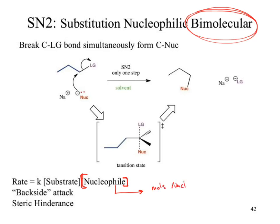Concentration equals moles of nucleophile divided by liters of solvent. If I double the solvent, concentration halves. Both nucleophile and substrate concentrations halve, so the rate drops by one-quarter. So solvent effects directly affect our rate even though solvent isn't explicitly in the rate law — it's in our concentrations. Watch out for that.